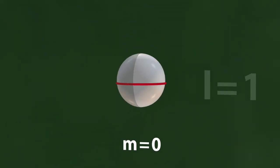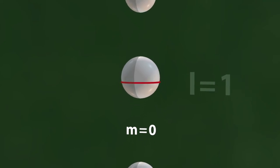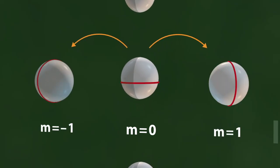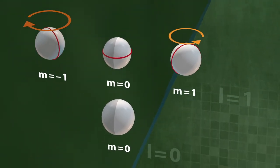However, this exceptionally symmetrical vibration does not reveal the full range of possibilities, because we can also rotate the nodal line on the sphere. Let's rotate that nodal line to the right or reflect it to the left.